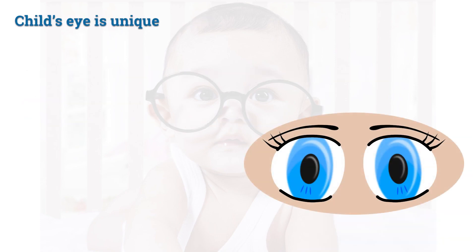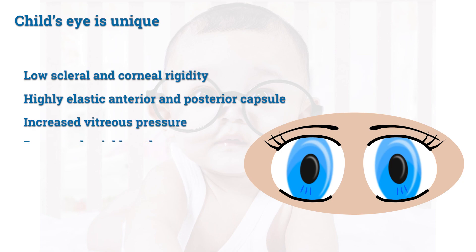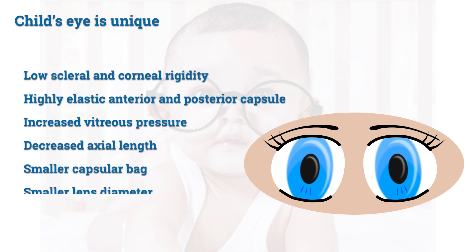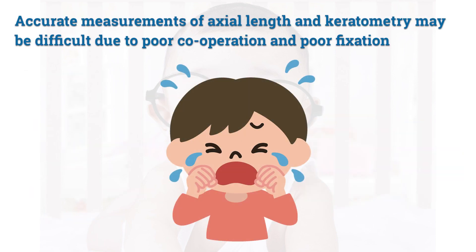A child's eye is unique because of the following factors: low scleral and corneal rigidity, highly elastic anterior and posterior capsule, increased vitreous pressure, decreased axial length, smaller capsular bag, smaller lens diameter, and myopic shift.